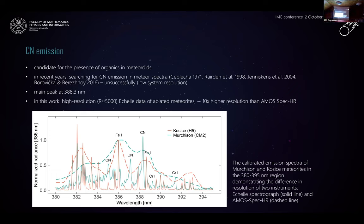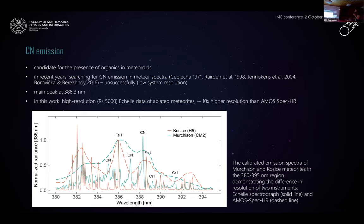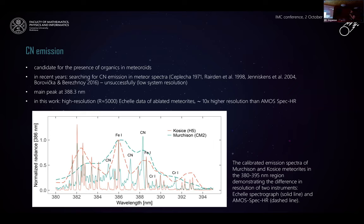The differences in resolution of these two instruments can be seen in this picture, where two different resolutions and two different meteorite spectra are displayed. The spectra of Košice and Murchison meteorites obtained by the AMOS system are marked by a solid line, and the spectra obtained by our échelle spectrograph are displayed by a dashed line. The first is the Murchison meteorite — a carbonaceous chondrite — with very strong CN emission with the main peak at 388.3 nanometers. The second is the ordinary chondrite Košice, with no CN emission.